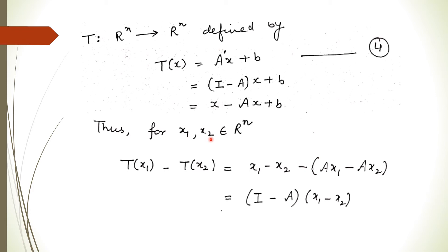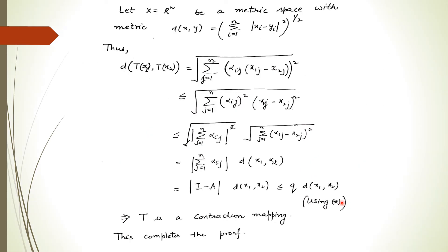If we take x1 and x2, any two members of ℝⁿ, then T(x1) - T(x2) equals (A'x1 + b) - (A'x2 + b). The b cancels out, leaving A'(x1 - x2), which equals (I - A)(x1 - x2). We have taken ℝⁿ as our domain, and we need to check whether the mapping T is a contraction. Since ℝⁿ is already a complete space, it is sufficient to check that this mapping is a contraction. By the Banach contraction principle, if T is a contraction mapping then there exists a unique solution.